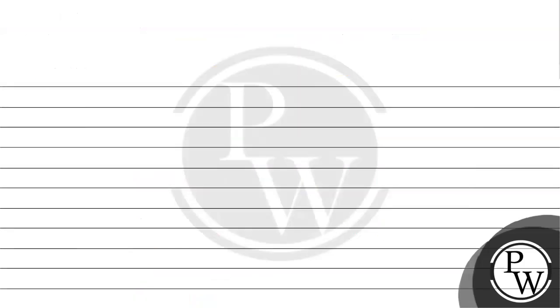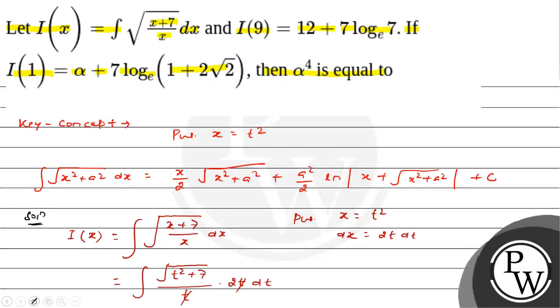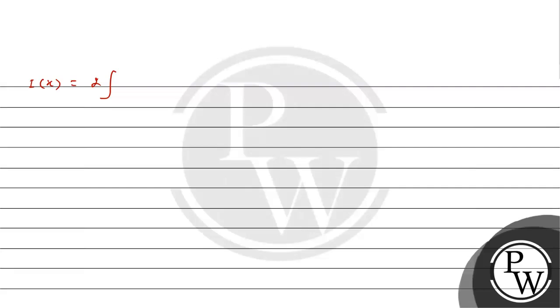Therefore I(x) can be written as 2 times the integral of √(t² + 7) dt.